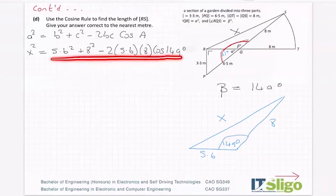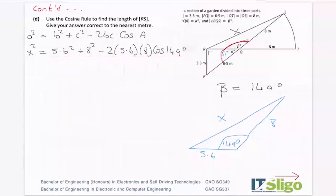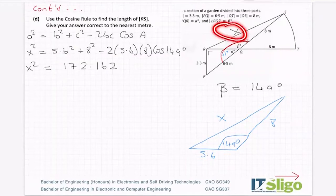I tend to put all that into the calculator in one go because it's just numbers. There's no letters in the minute. There's no algebra in the middle of it. So I can put it into the calculator. So 5.6 squared plus 8 squared minus 2 times 5.6 times 8 cos 149. And I'm getting x squared to be equal to 172.162.